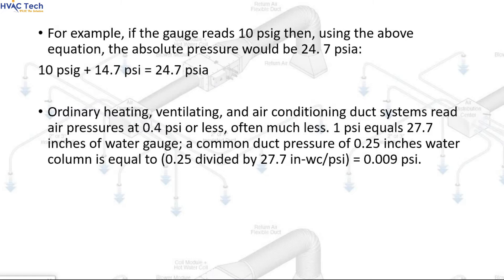10 psig + 14.7 psi = 24.7 psi. Ordinary heating, ventilating, and air conditioning duct systems read air pressures at 0.4 psi or less, often much less. 1 psi equals 27.7 inches of water gauge. A common duct pressure of 0.25 inches water column is equal to 0.25 divided by 27.7 in WC/psi, which equals 0.009 psi.